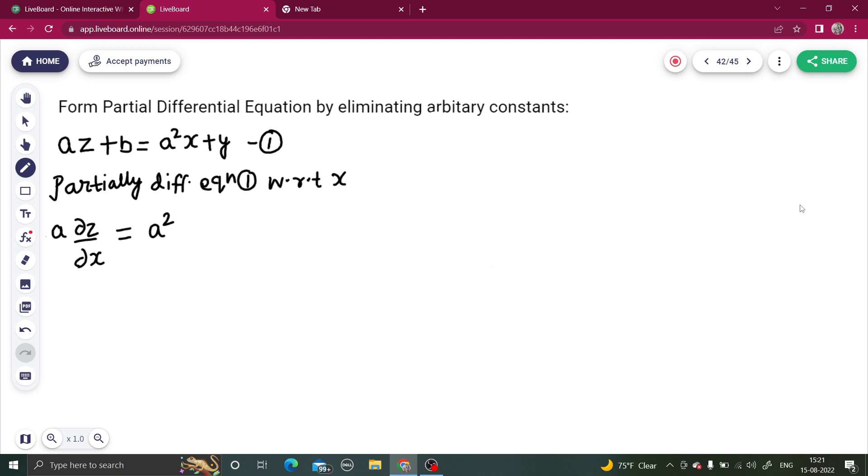So what we can do is either we directly find the value of a squared or if you want to find the value of a then cancel one a. So you are going to get ∂z/∂x is p equals to a. Looks like a good equation. Let's mark this as equation number two.